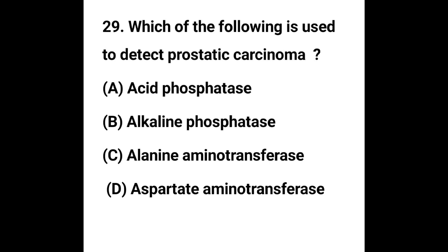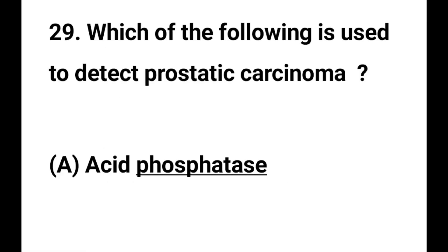Question number 29. Which of the following is used to detect prostatic carcinoma? Option A - Acid phosphatase, Option B - Alkaline phosphatase, Option C - Alanine aminotransferase, Option D - Aspartate aminotransferase. The correct answer is Acid phosphatase. ACP (Acid Phosphatase) is used to detect prostatic carcinoma.